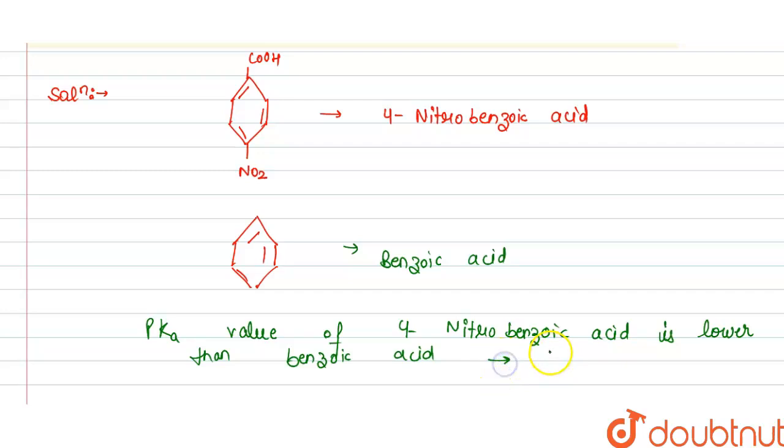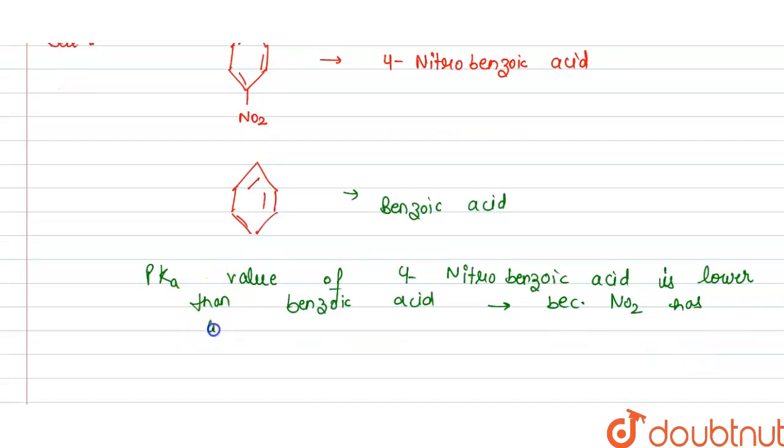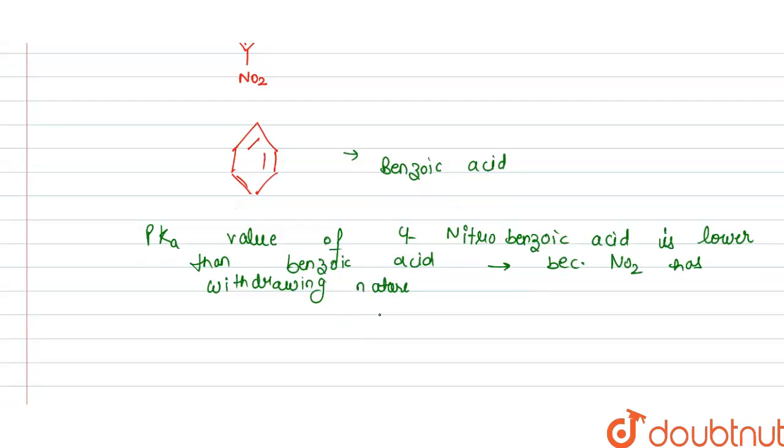Because NO2 has withdrawing nature and it is placed at the para position, at which the tendency to lose H+ increases and its acidic character increases.